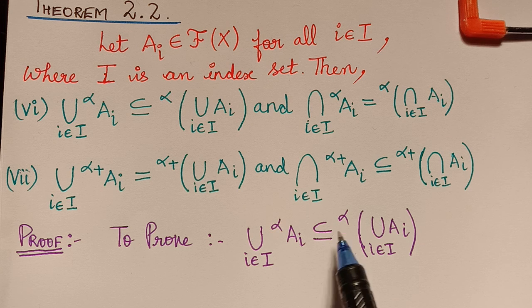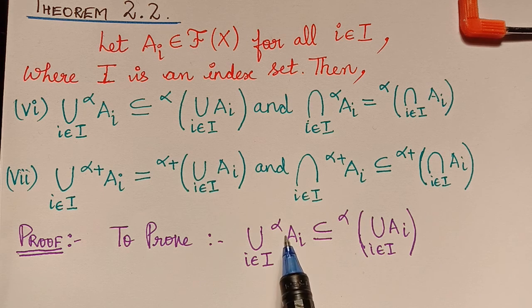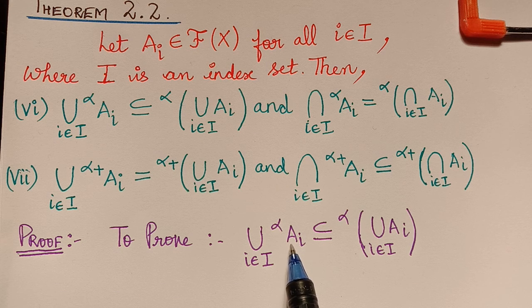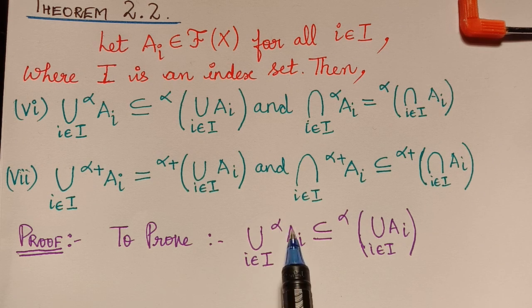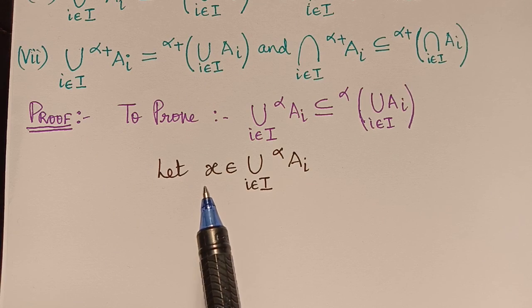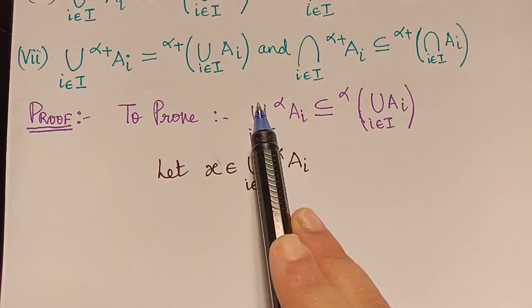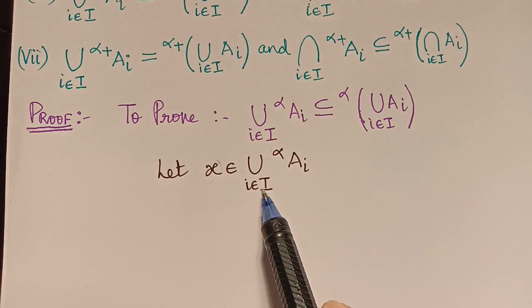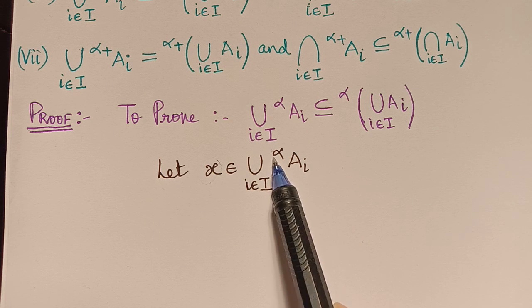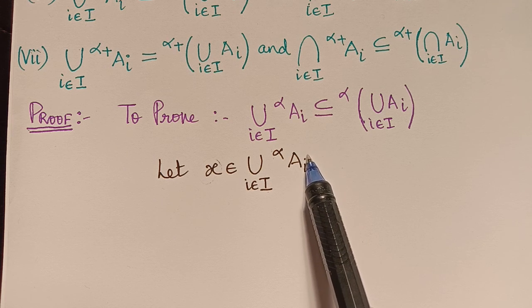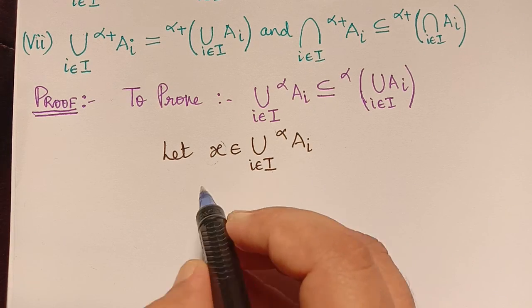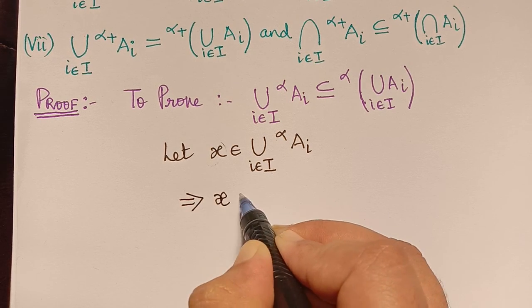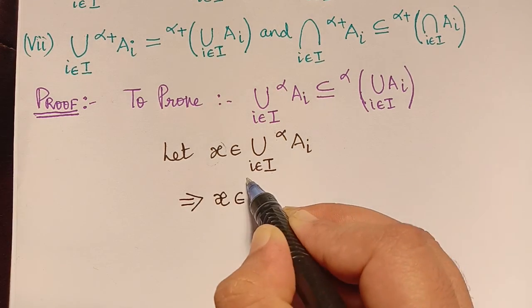To prove the subset relation, we choose an element from the left-hand set and prove it also belongs to the right-hand set. Let us consider an element x from the set — that is, x is in the union over i in capital I of the alpha cut of A_i, where the index i represents an infinite collection.